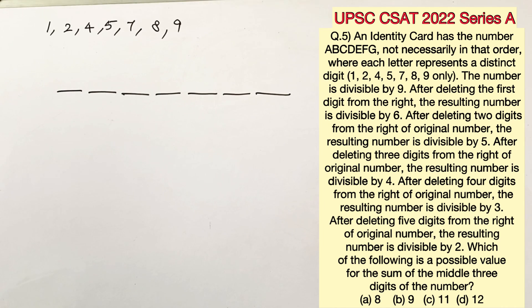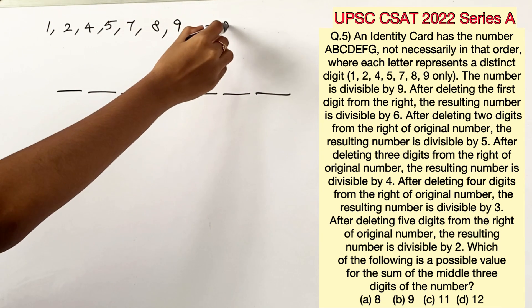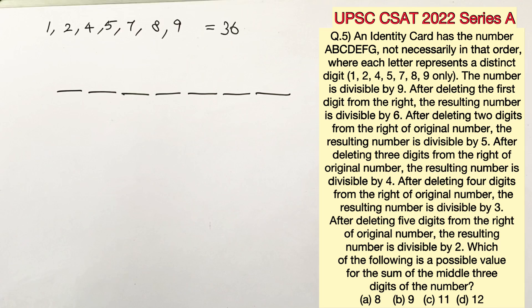The first condition that they have given is that the number is divisible by 9. So basically the addition of all these digits is going to give us something that is divisible by 9 which is 36.